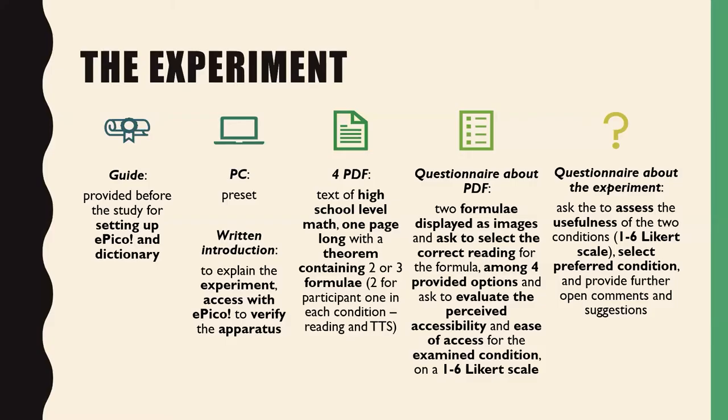The experiment was divided into different parts. First, we gave them a guide before the experiment to set up Epico and the dictionary. After they came to the laboratory with a preset computer, we gave them an introduction to explain the experiment and verify the apparatus. Then we gave them two PDFs: one they had to access by reading with no compensatory tools, and one they had to access with our apparatus. After each PDF, we gave them a questionnaire with two formulae to choose from among four options.